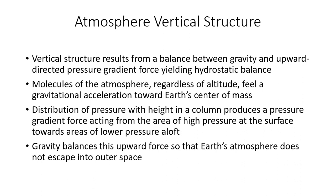Molecules of the atmosphere, regardless of their altitude above the Earth's surface, are going to feel gravitational acceleration towards the Earth's center of mass. The distribution of pressure with height produces a pressure gradient force — a change in pressure over that vertical distance from the surface upward. This always acts from areas of higher pressure, where air molecules are more tightly packed near the surface, upward toward areas of lower pressure aloft where molecules are less tightly packed and density is much less. Gravity balances this upward-directed pressure gradient force so that the Earth's atmosphere does not escape into outer space.